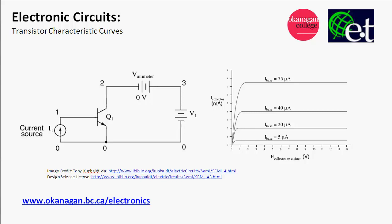On the right-hand side here, you can see a characteristic curve, which is the relationship between the collector and the emitter voltage and the collector current for several different base currents. I'm going to get into the details of how this curve is drawn and what kind of information that curve can tell you.